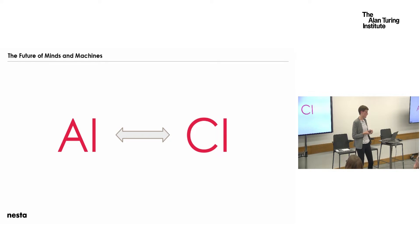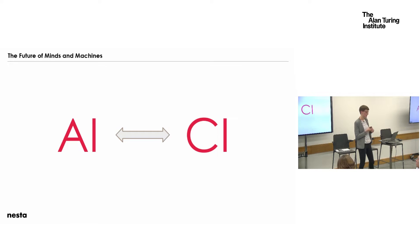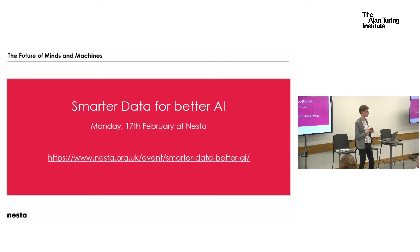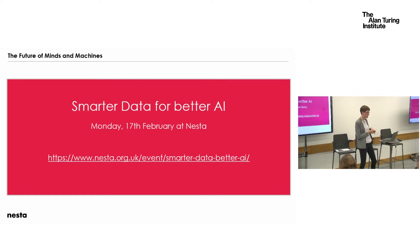I want to quickly talk about one piece of research we're currently doing, which is about how artificial intelligence can enhance and scale collective intelligence for applications in the public sector. This is a report going to be published in about 10 days at an event called Smarter Data for Better AI at Nesta — registration is still open. Because it's not published yet, I can only talk about it briefly, but I want to give a couple of examples of how AI and the crowd can work together.